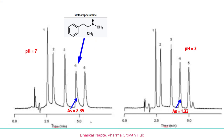Let us see this with a simple example shown on screen. There are five different peaks in the chromatogram. On the left side, the mobile phase pH equals 7, and the asymmetry or tailing of peak number four — methamphetamine — is 2.35. Now changing the pH from 7 to 3, on the right side of the chromatogram, the tailing of the same peak has reduced to 1.33. This reduction is clearly because of the suppression of silanol ionization at acidic pH.